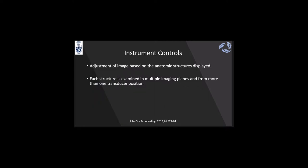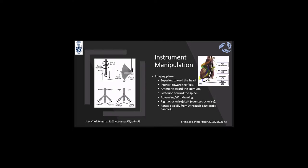With the instrument controls, we want to adjust the image based on the anatomic structures displayed — you need to optimize your image for the structures you are assessing. Each structure is examined in multiple imaging planes from more than one transducer position. The possibilities in transesophageal echo, as described in the comprehensive TEE examination from the ASE 2013 guidelines, include: advance, withdraw, turn left, turn right, flex right, and flex left.